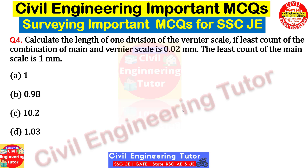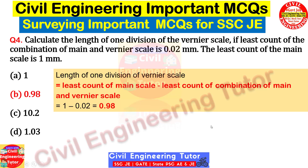Question four: calculate the length of one division of the vernier scale, given that the least count of the combination of main and vernier scale is 0.02 mm, and the least count of the main scale is 1 mm. The formula to remember is: length of one division of vernier scale = least count of main scale minus least count of the combination of main and vernier scale. So 1 mm minus 0.02 mm gives the answer: 0.98 mm.